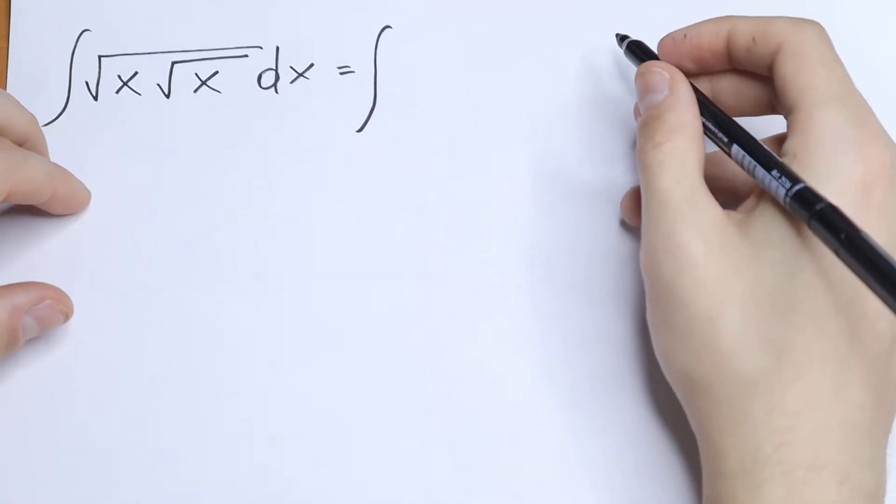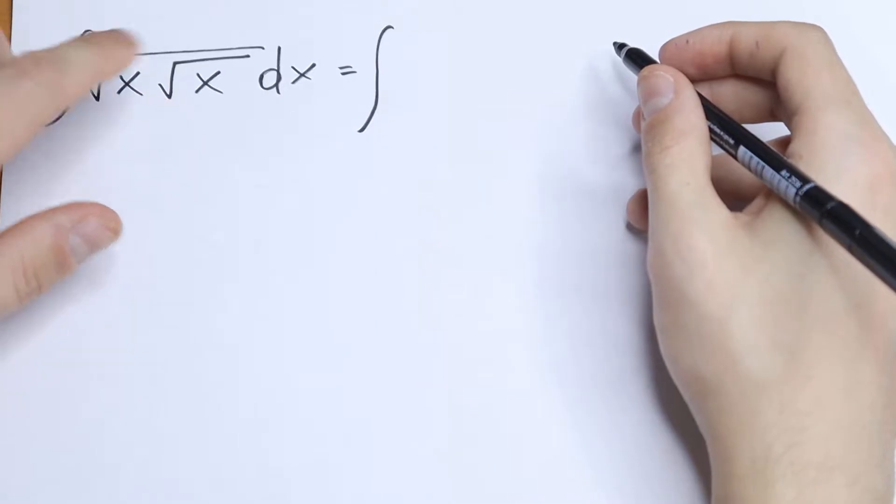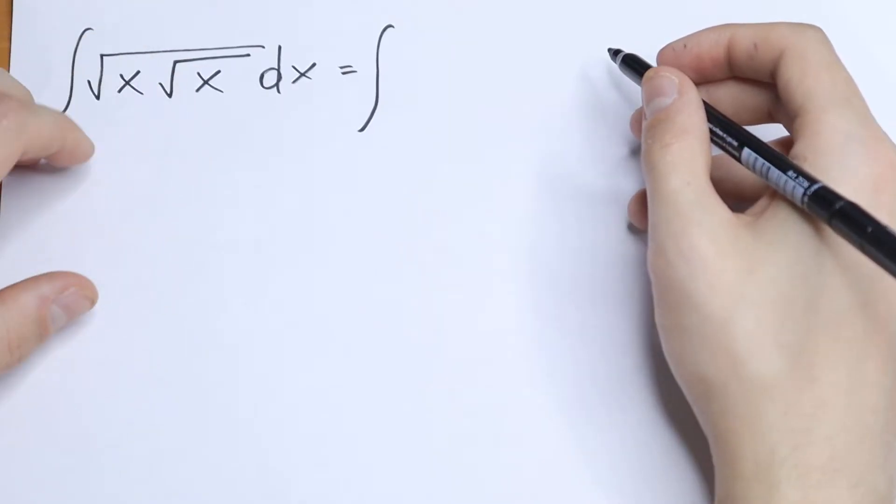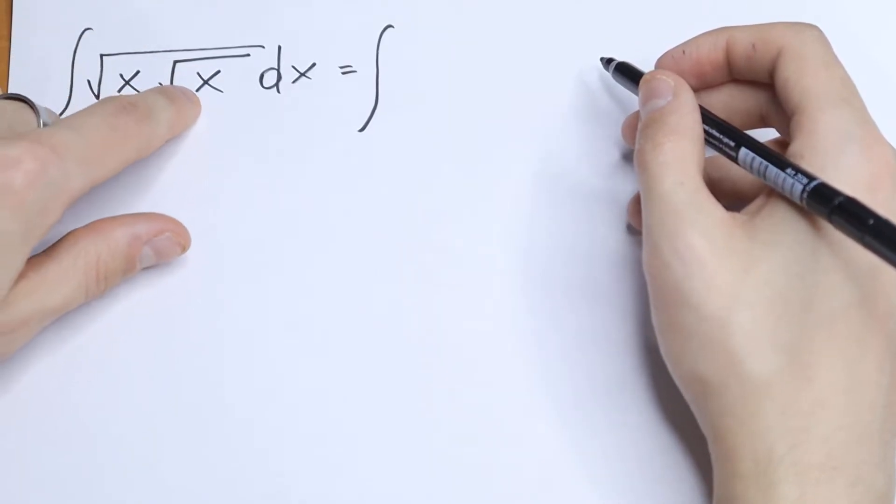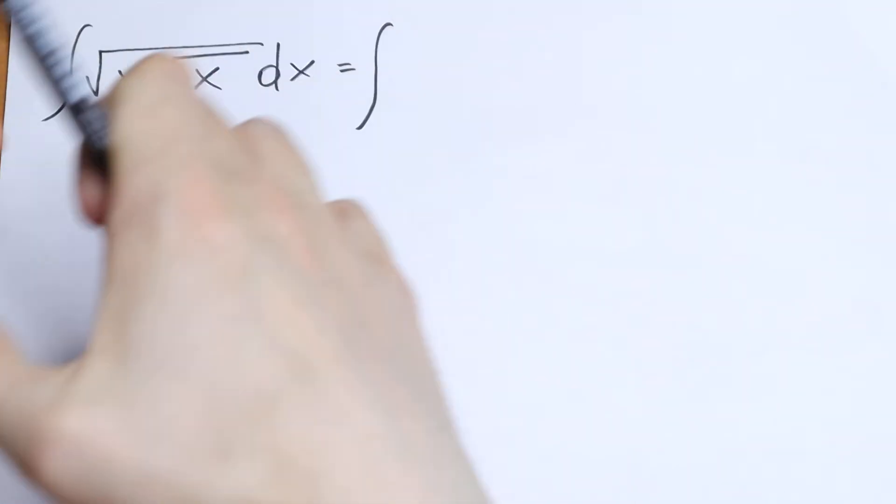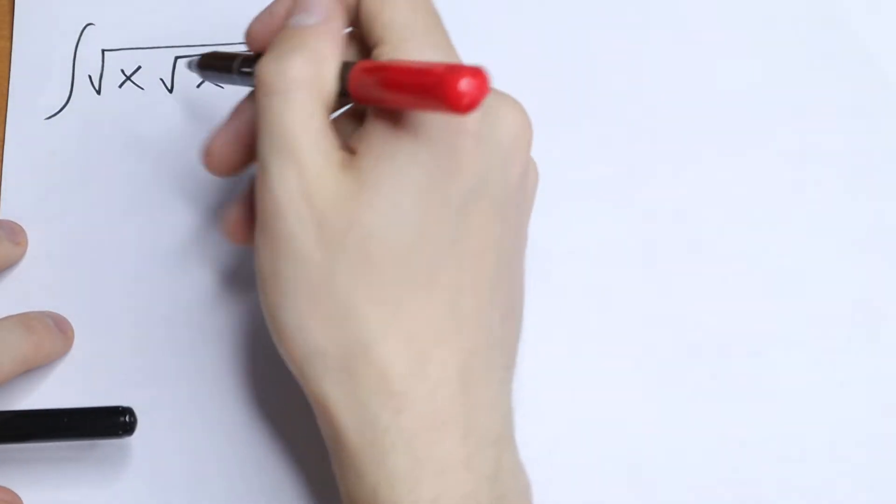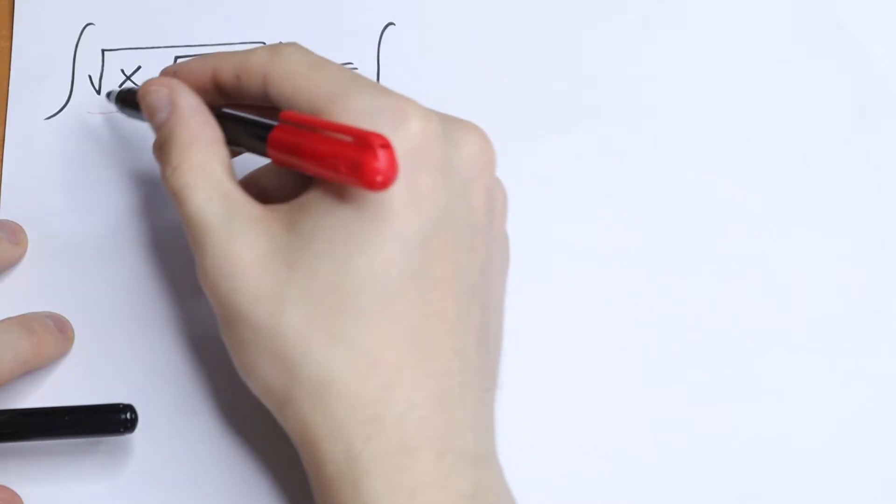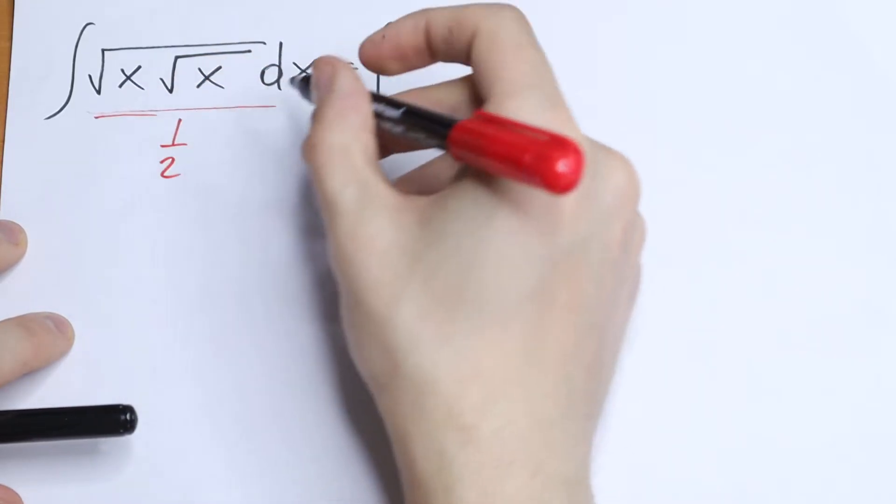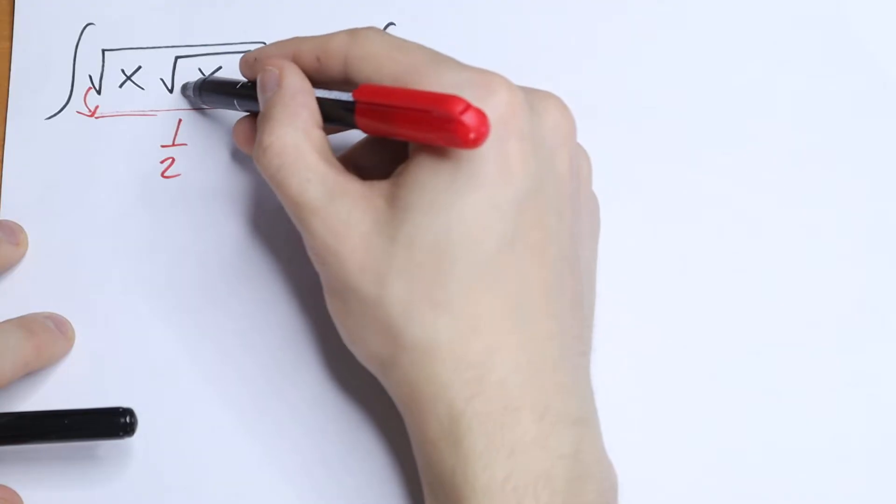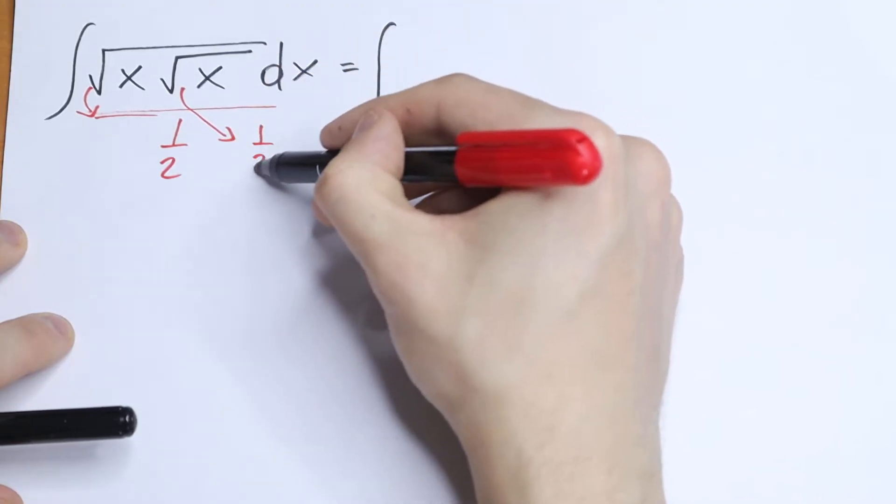So what I recommend is to write this square root sign in another way. Let's write this square root of x as x to the power 1 half. Let's write this x to the power 1 half. So this square root will be power 1 half, and this square root will be power 1 half as well.